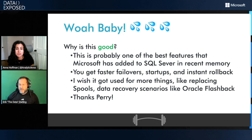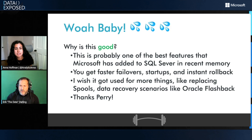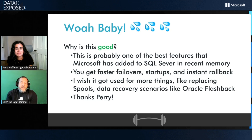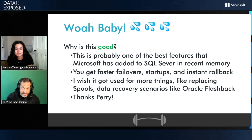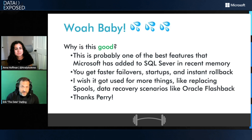ADR is not on by default — do you recommend it for everybody? I do recommend it for everybody, but especially for people still using the default read committed isolation level, because you run into a lot of weird problems with that one. If you want to read some tea leaves, ask yourself why Microsoft made read committed snapshot isolation the default for Azure SQL DB — I think as soon as they had to start dealing with customer locking and blocking problems, they were like: no way.